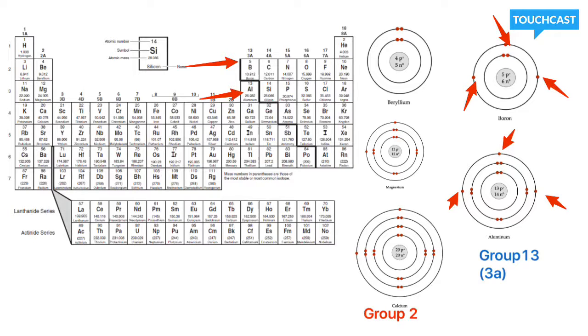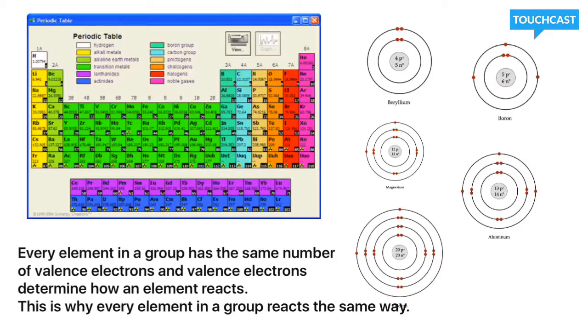Alright, we're going to cover one last thing and then we'll be done. We just showed y'all that basically every element in a group has the same number of valence electrons. And we already mentioned that valence electrons determine how an element reacts.